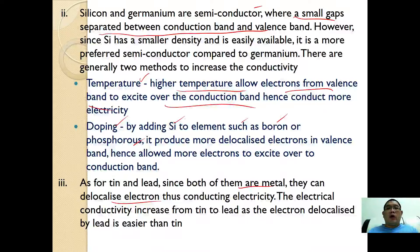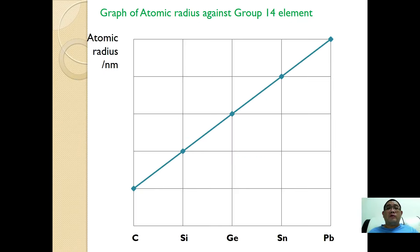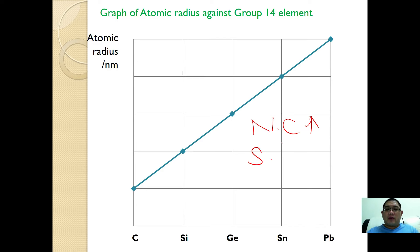Conductivity slightly increases from tin to lead because it is easier to delocalize electrons for lead compared to tin. To summarize with graphs: when going down group 14, atomic radius increases. This can be described as nuclear charge increases, screening effect increases, therefore effective nuclear charge decreases, and as a result atomic radius increases.